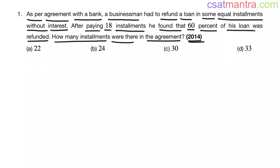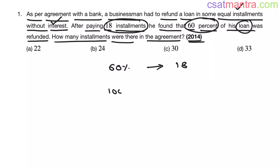He is paying the loan in equal installments and there is no interest on that. He paid 60% of the loan in 18 installments. So 60% of the loan is 18 installments, and 100% of the loan he took.